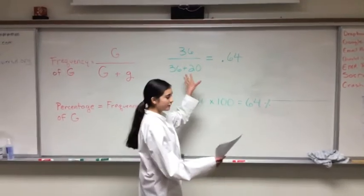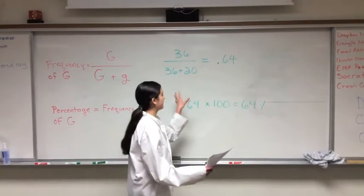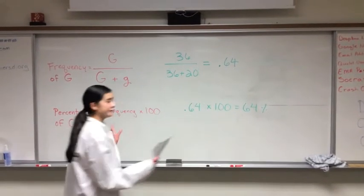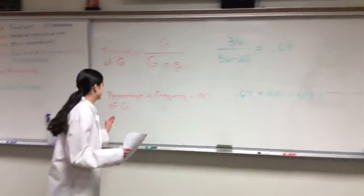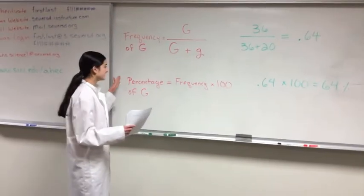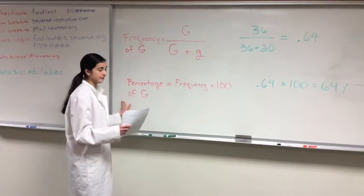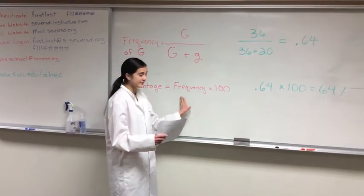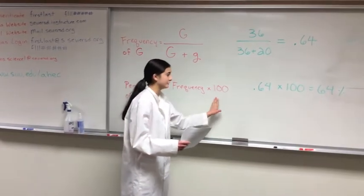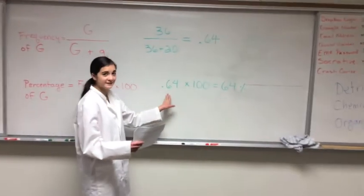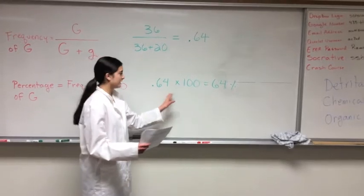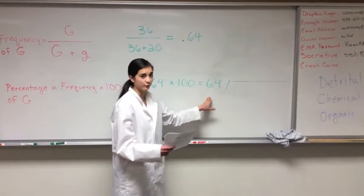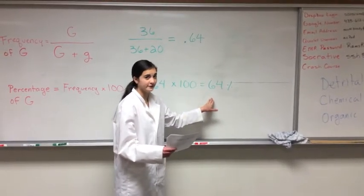Once we've got our frequency figured out, we can use that to find our percentage. The percentage of big G is the frequency multiplied by 100. So 0.64 times 100 equals 64%.